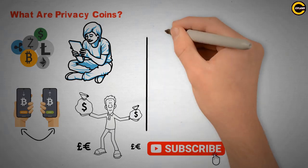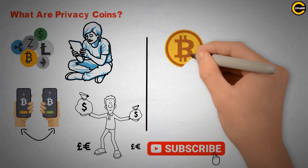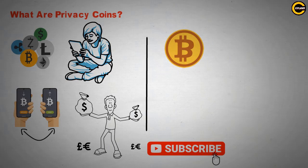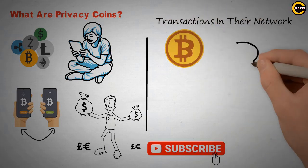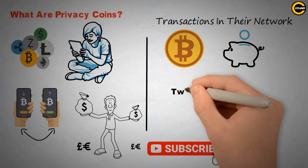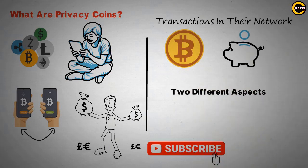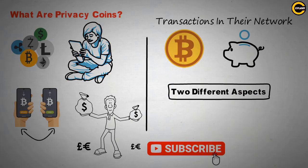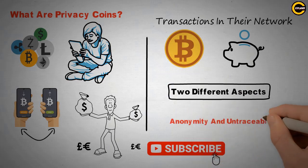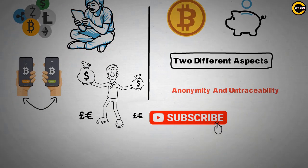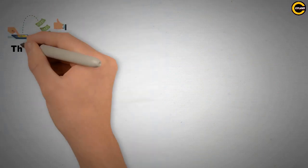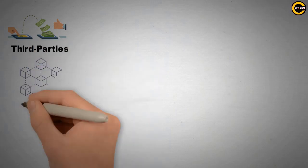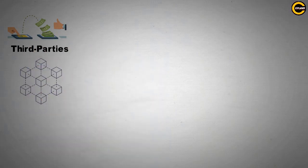In the spirit of transparency, Bitcoin and other non-privacy blockchains allow anyone to view public addresses and transactions in their network, which makes it relatively simple to track someone's deposits and withdrawals. However, privacy coins handle two different aspects: anonymity and untraceability. Anonymity hides the identity behind a transaction, while untraceability makes it virtually impossible for third parties to follow the trail of transactions using services such as blockchain analysis.